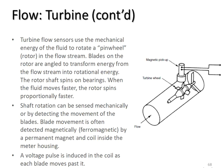How does the turbine flow sensor work? Turbine flow sensors use the mechanical energy of the fluid to rotate a pinwheel or rotor in the flow stream. Blades on the rotor are angled to transform energy from the flow stream into rotational energy.